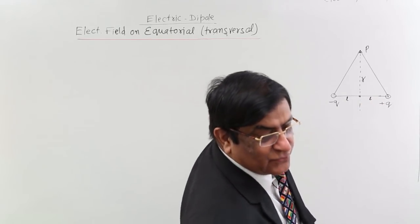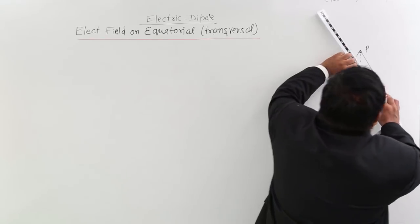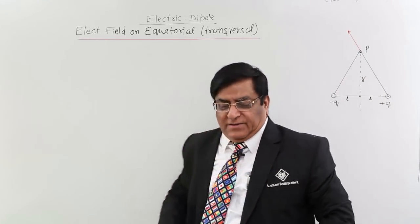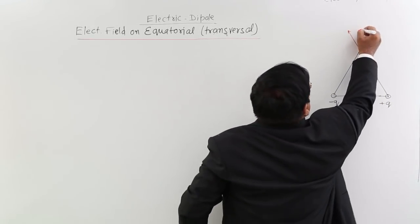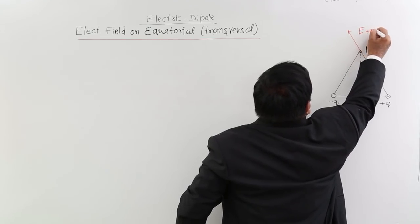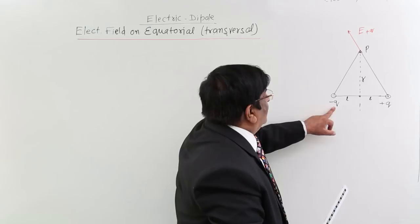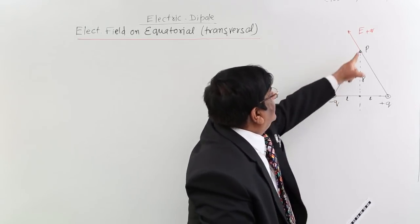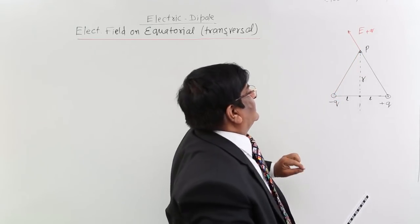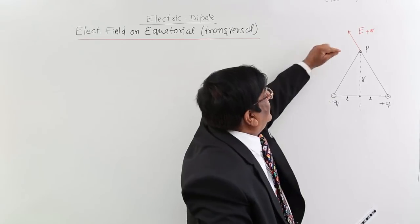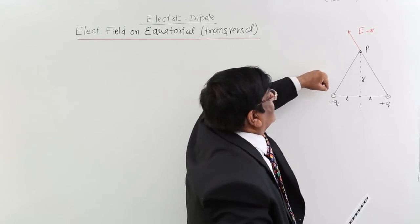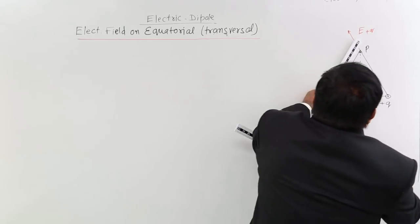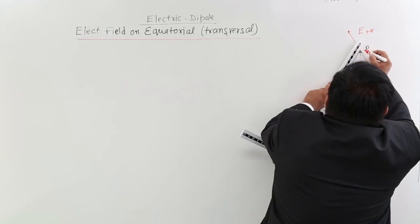The electric field due to plus Q always repels, so the electric field due to plus Q will be directed away from it, in this direction. This is E due to plus Q. Now minus Q will make an electric field directed towards the negative charge. You can also test with a test charge — if you place a test charge at P, the minus Q will attract it. So the electric field due to minus Q is directed in this direction toward the negative charge.